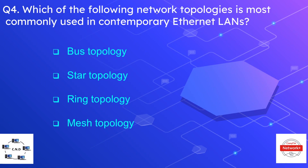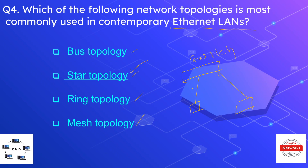Question number four: which of the following network topologies is most commonly used in contemporary Ethernet LANs? Options are bus, star, ring, and mesh topologies. The correct answer is star topology — nodes or hosts are typically connected to a switch in the form of a star, which is the most used topology in the contemporary world.